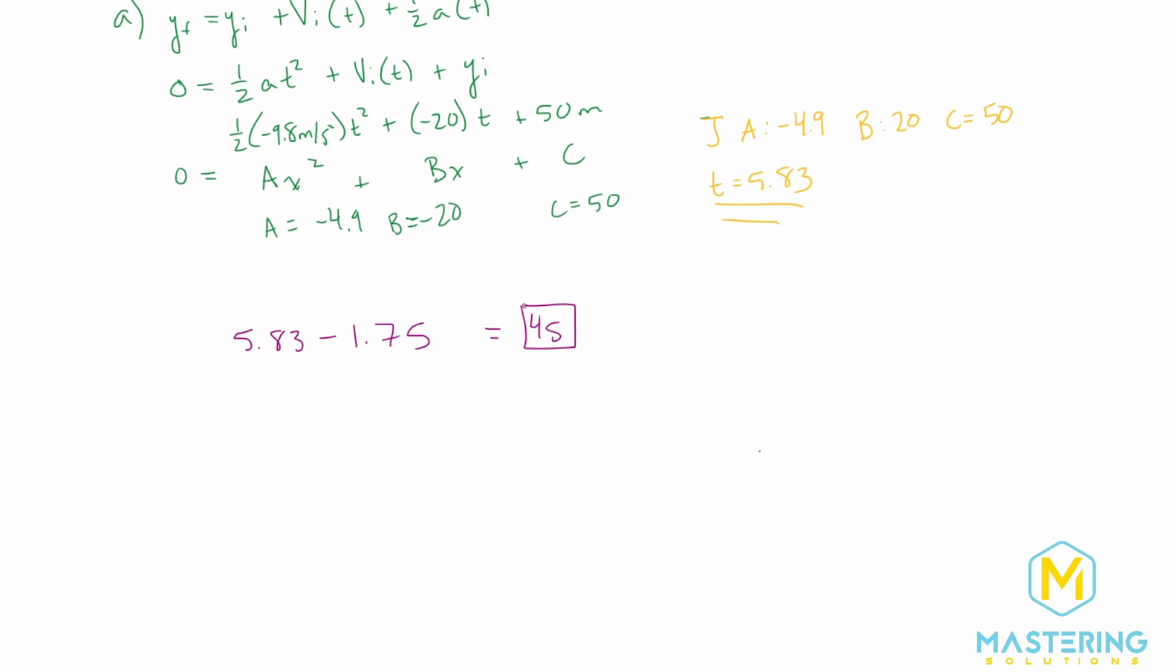Now we need to figure out which rock was going faster or was it the same. This is actually pretty cool to see this. It might kind of blow your brain a little bit, but let's show you. The equation that we'll use is v final equals v initial plus acceleration times the time. So let's do it for Heather first. Her v final is going to be equal to a velocity initial of negative 20 meters per second plus the acceleration of negative 9.8 meters per second squared times the time for her of 1.75 seconds.